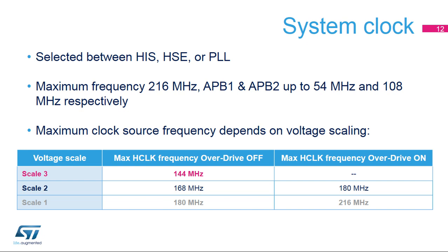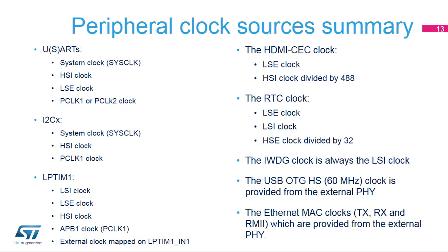Several peripherals have their own clock, independent from the system clock. This is the case for the USARTs, I2Cs, low-power timer, HDMI-CEC interface, independent watchdog, USB OTG-HS internal PHY clock, and Ethernet MAC clocks, when available in the device package. All of these clocks can be selected from the internal or external oscillators, a dedicated external clock pin, or bus interface clocks.